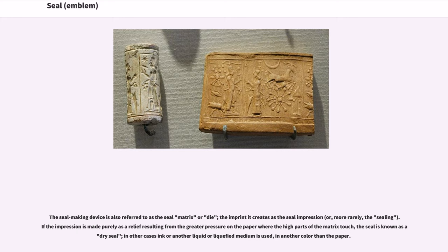If the impression is made purely as a relief resulting from the greater pressure on the paper where the high parts of the matrix touch, the seal is known as a dry seal. In other cases ink or another liquid or liquefied medium is used, in another color than the paper.